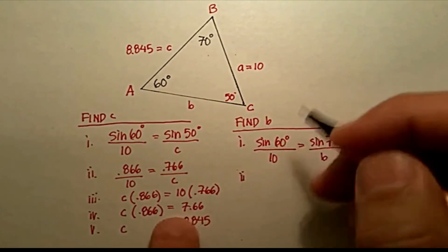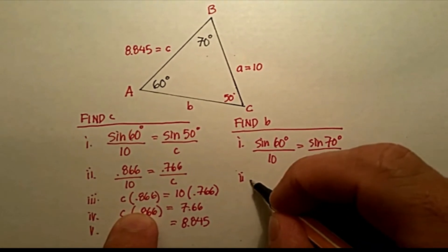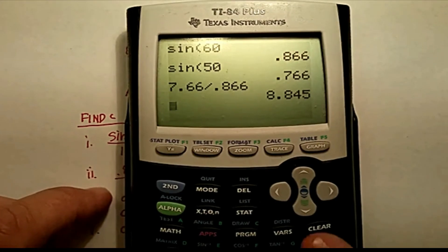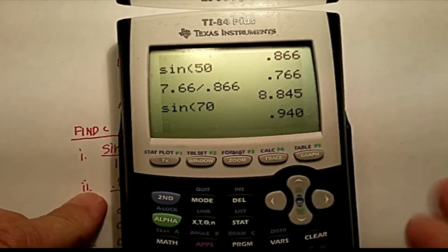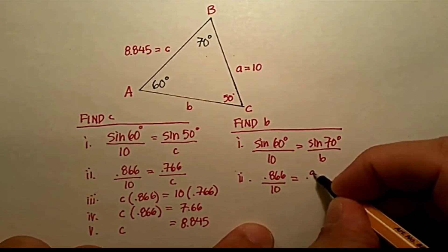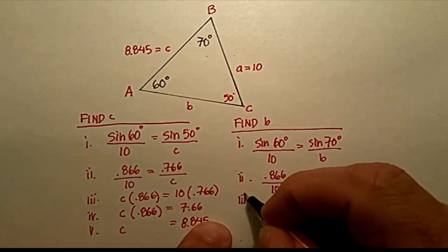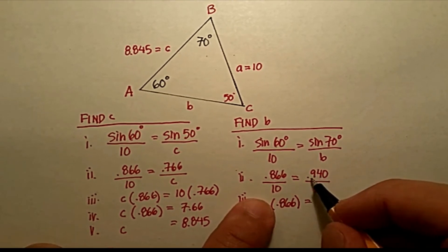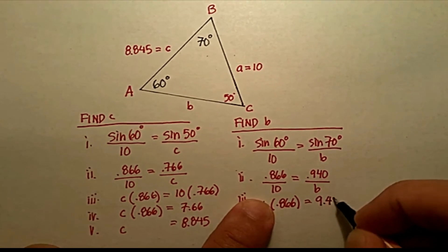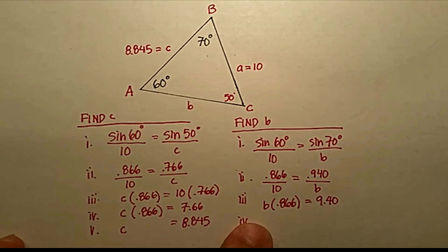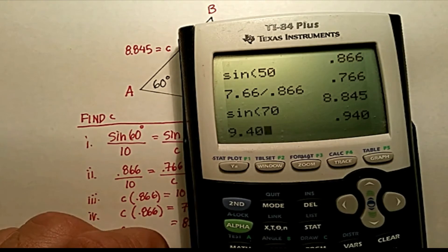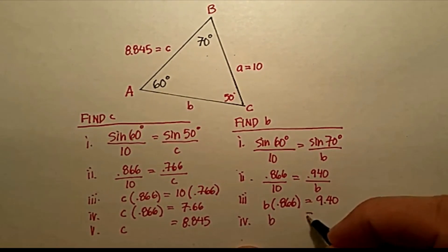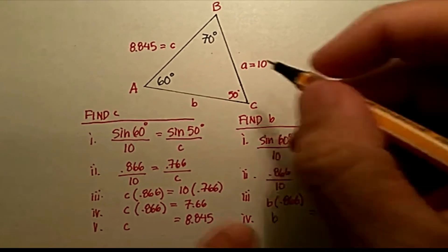All right? We already know that the sine of 60 is 0.866 divided by 10. So, we know that the sine of 70 is 0.940. We'll do cross products. It gives me B times 0.866 is equal to 10 times 0.940, which is 9.40. Let's divide both sides by 0.866. 9.40 divided by 0.866. And I get 10.855. And there we go.